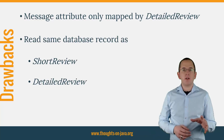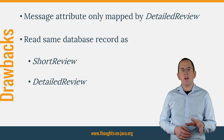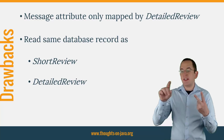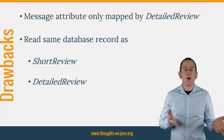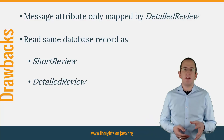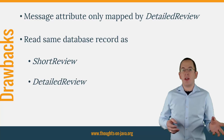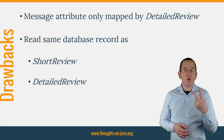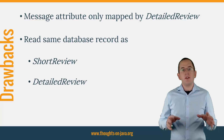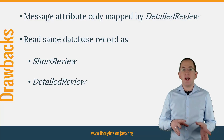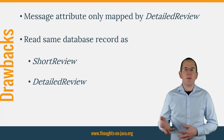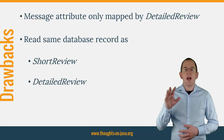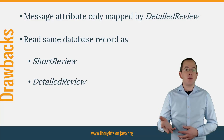You can read the same database record as a ShortReview and a DetailedReview. If you do that within the same Hibernate session, you get 2 managed entities that map the same database record. That can become an issue if you change both entities and Hibernate tries to persist them — Hibernate doesn't know that both entities represent the same database record and will create 2 SQL Update statements. The second one will fail with an optimistic lock exception. You might consider modeling the ShortReview entity as an immutable entity, and then implement all write operations using a DetailedReview entity.